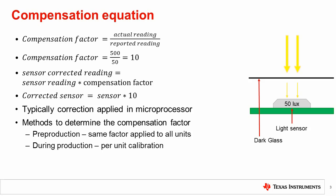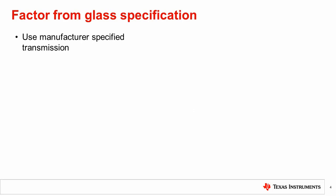Now we will discuss the pre-production methods for determining a fixed compensation factor. The first method of correction is to take the cover glass transmission specification from the manufacturer. Usually, dark glass will have a transmission spec. For example, a dark glass with 10% transmission for visible light will yield a correction factor of 10, as shown.